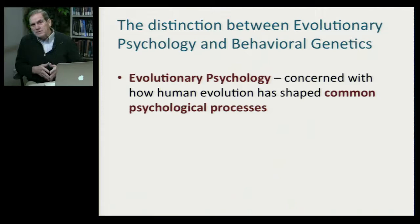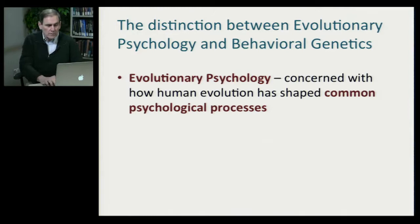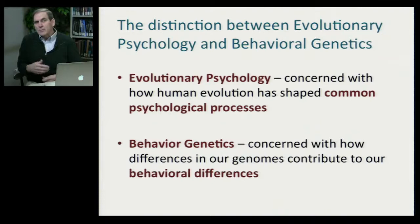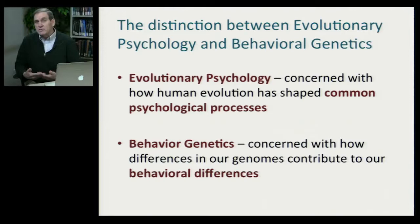The area of psychology that's interested in how genetics shapes these common psychological mechanisms or processes is called evolutionary psychology. We won't be talking about evolutionary psychology in this course. Rather, what behavioral genetics is interested in is not so much the commonality in our psychological processes, but the differences among us — why some of us suffer schizophrenia and others don't, why some of us are extroverted while others are introverted. Behavioral genetics is interested in individual differences.